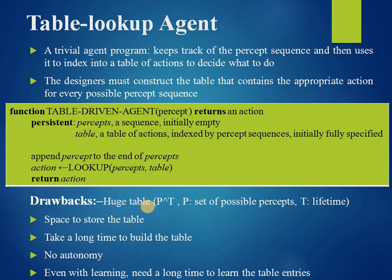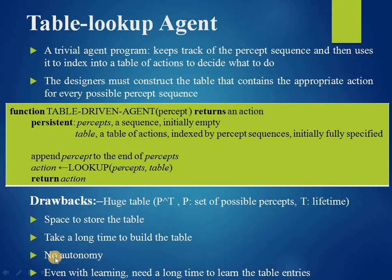There are certain drawbacks of this table-driven approach. No physical agent will have the space to store such a huge table. The designer would not have the time to create the table. No agent could ever learn the right table entries from its experience, so there is no autonomy. Even if the environment is simple enough to yield a feasible table size, the designer has no guidance on how to fill the entries — even with learning, it would take a very long time.